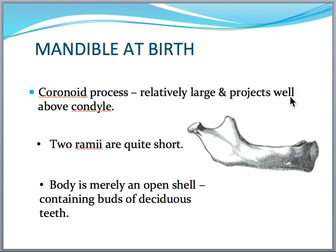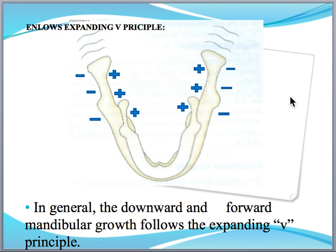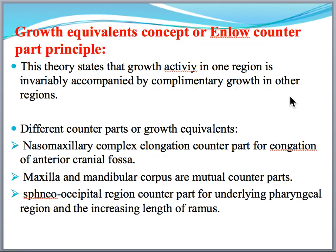At the time of birth, the mandible is very short, and you have to describe its appearance. Postnatally, after birth, it expands through the V-principle explained in previous videos. Another seven-marks question topic is Enlow's counterpart principle — for every part there is an opposite counterpart growing at the same pace. Maxilla and mandible are counterparts to each other, and the middle cranial fossa is a counterpart to the nasomaxillary fossa.